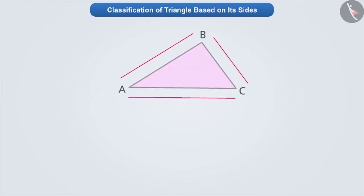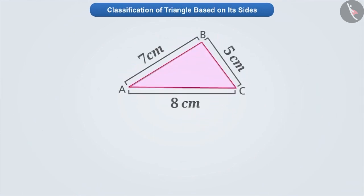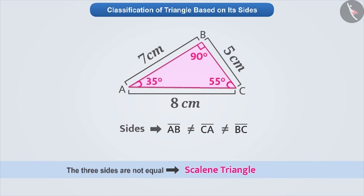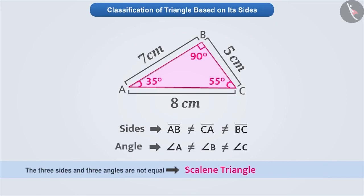Look at this triangle. If we take the measurement of its three sides, then we will know that all its three sides are not equal. Such triangles, whose sides are not equal, are called scalene triangles. If we take the measurement of its angles, then we will know that its angles are not equal. In this way, we can say that if all three sides of a triangle are not equal, then its angles are also not equal.